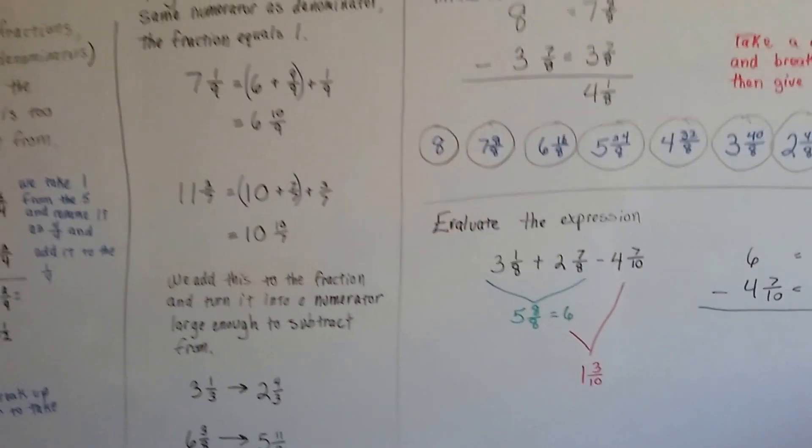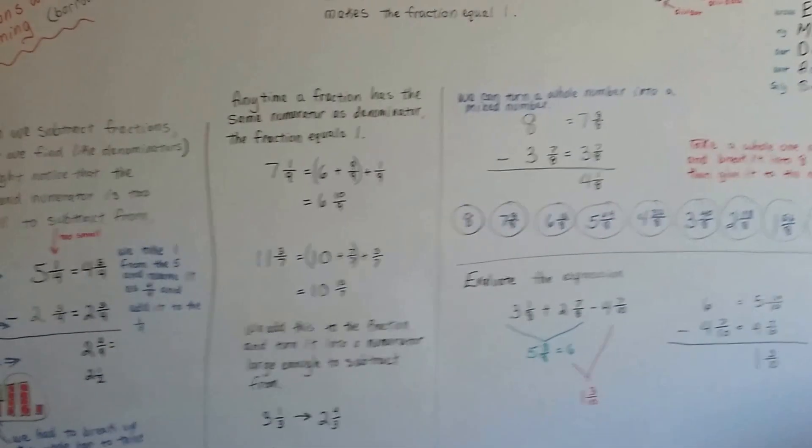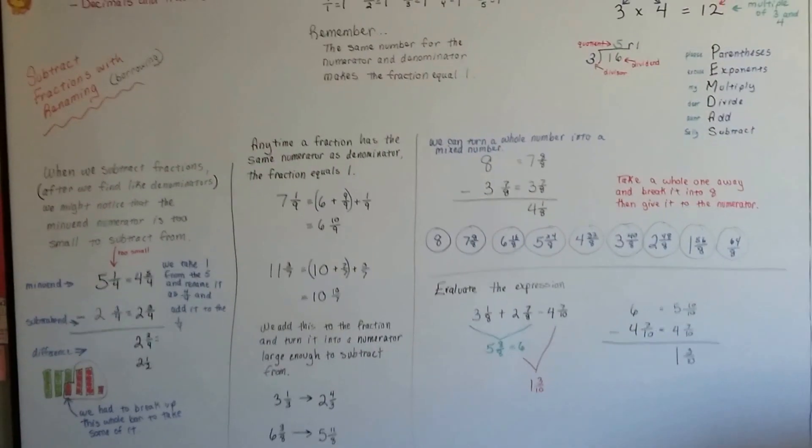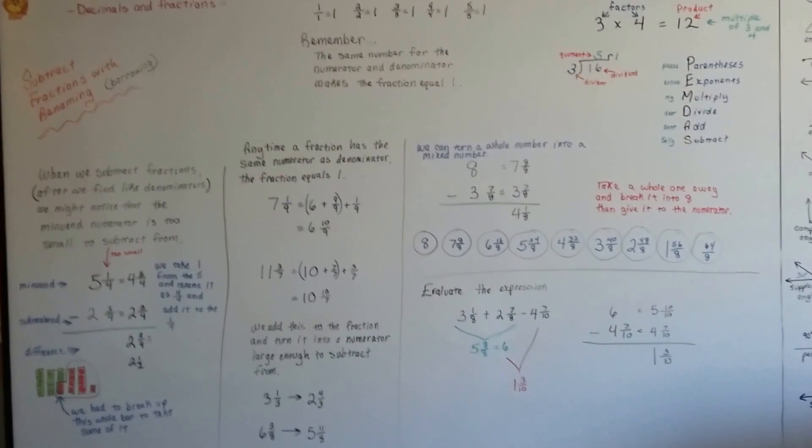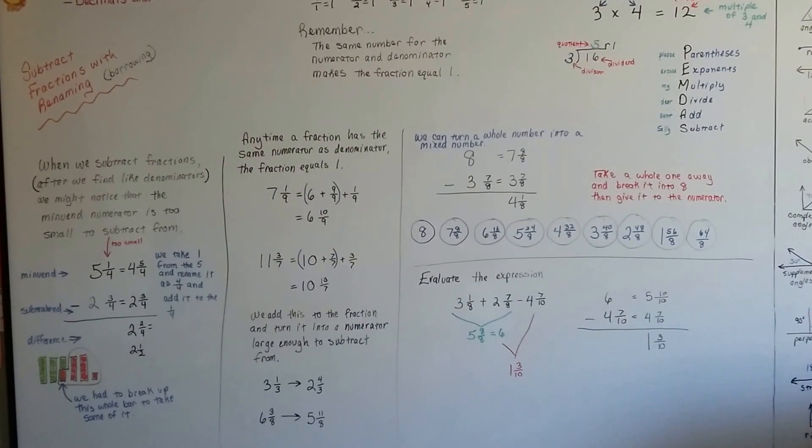So just remember, it doesn't matter what your denominator is, you can still make one whole by having the same number as the numerator and the denominator. I hope this explained it well enough. Keep up the good work and I'll see you next video. Bye.